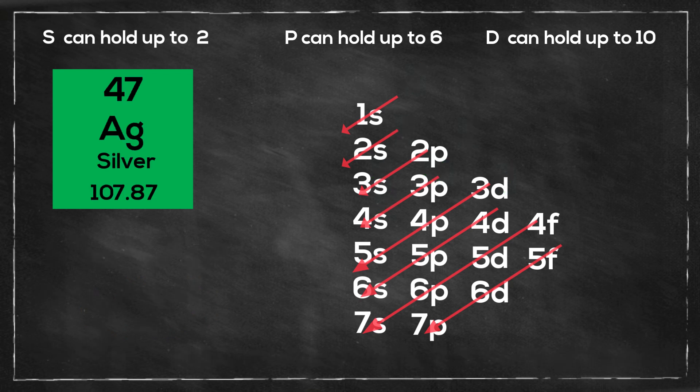Silver follows a very similar pattern. It has an atomic number of 47, so it has 47 electrons.